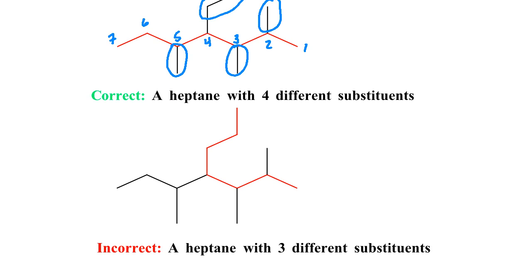Now, I'm not sure if you've noticed, but I could also end up counting by saying 1, 2, 3, 4, 5, 6, 7. So I get a heptane again. This is a very different parent chain because now I have three substituents.